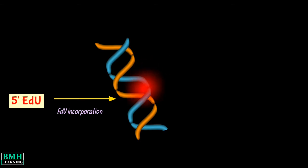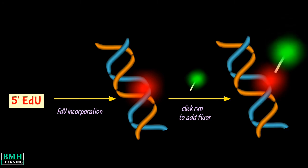In EDU staining, EDU is incorporated into newly synthesized DNA by cells within a sample. A fluorescent azide, e.g. iFL488, is then added. The fluorescent azide is small enough to diffuse freely through native tissues and DNA, and it covalently cross-links to the EDU in a click chemistry reaction. The fluorophore-labeled azide reacts with the incorporated EDU to allow detection by microscopy or flow cytometry.